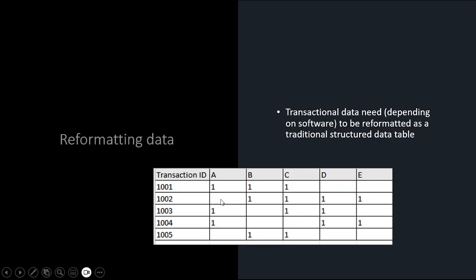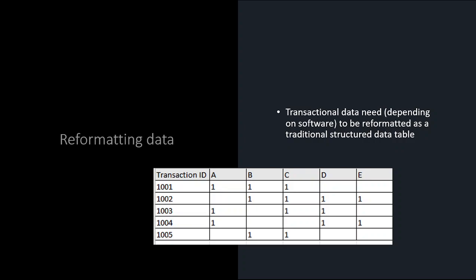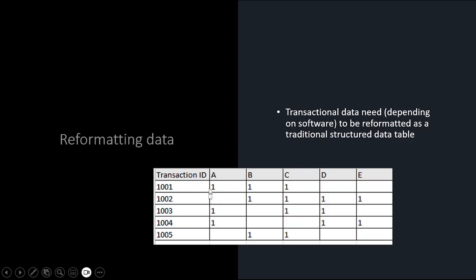The reason not to put zeros in is that when you do your association analysis, it's going to analyze both cases — purchased and not purchased — which you don't necessarily want. You only care about when they did purchase A; you don't care about the fact that they didn't. In Orange, it will do analysis on A equals zero — not bought — and you don't care about that. So just set up the data with ones only.